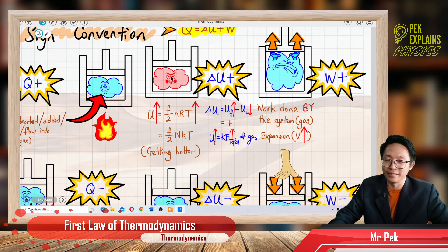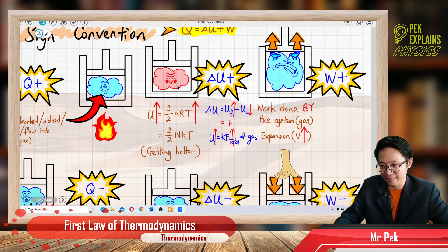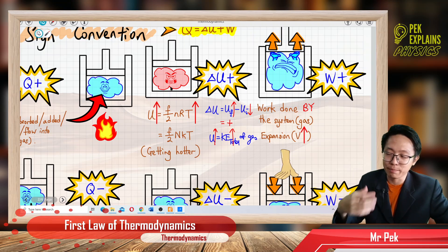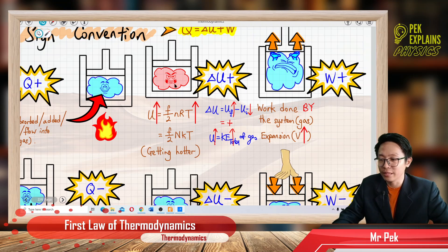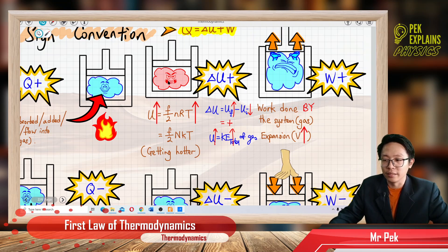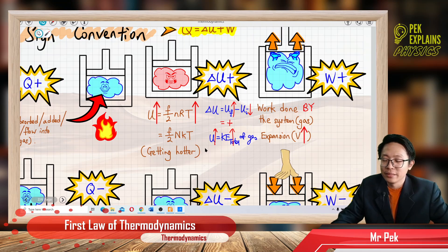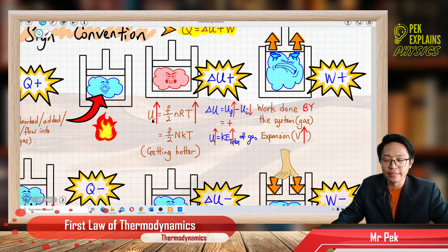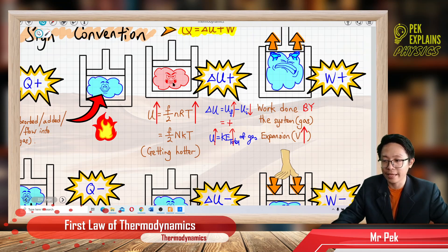I purposely personify the gas — using emoji to make it look more realistic so you can understand better. We think of the gas like a real person. So when internal energy increases, the temperature of the gas also increases. The gas becomes angry, becomes hot. Internal energy is proportional to temperature: when internal energy increases, temperature also increases.